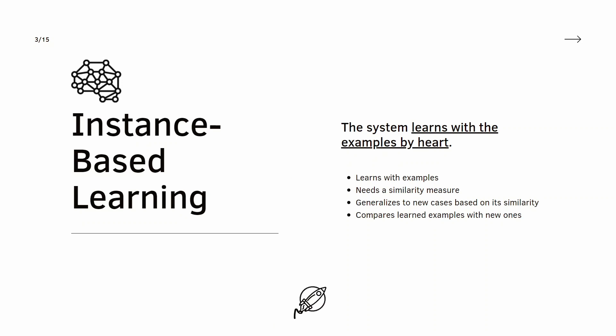Starting with instance-based learning. In this type of learning the system learns with examples by heart, looking at the characteristics of these examples and then generalizing to a new instance. It uses a similarity measure to compare these new cases with the ones that it already learned.